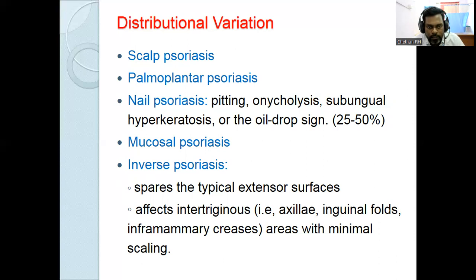Nail psoriasis is divided into nail bed psoriasis and nail plate psoriasis. Features include nail pits — irregular, coarse pits more than 20 in number — distal onycholysis, subungual hyperkeratosis, salmon patch, oil drop sign, and trachyonychia (twenty-nail dystrophy or rough nails).